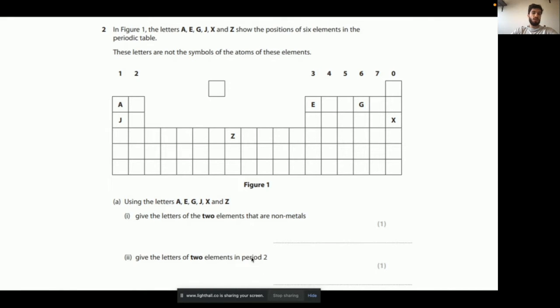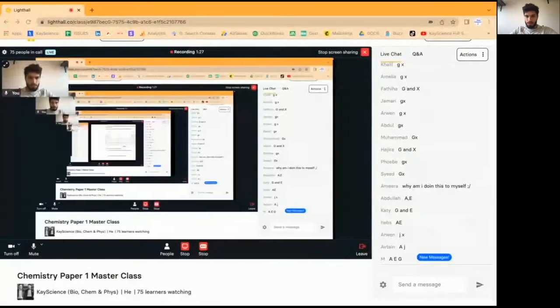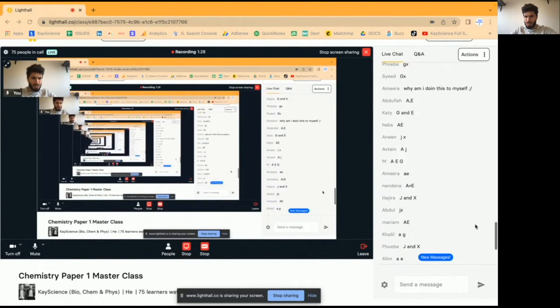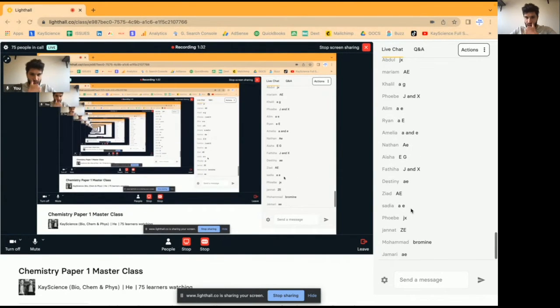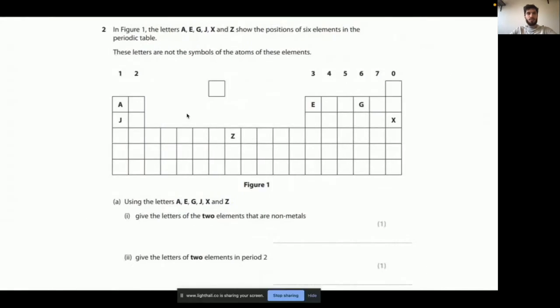Give the letters of two elements in period two. What are they? Three, two, one, go. I see people making some classic mistakes. J and X. J and X, Z, E, A, E.